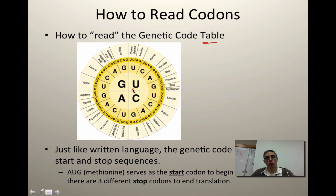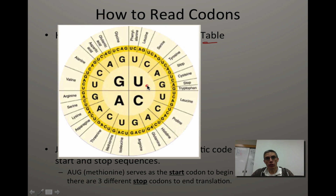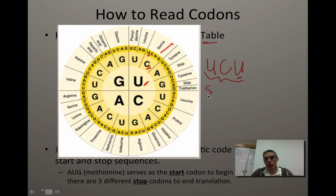Let's say, for example, that we have the code UCU — that's going to be found on our messenger RNA strand. You would start on the inside of the table at U, then work your way out to C, and then our third nitrogen base is U. If you decode this — in other words, what type of amino acid would be produced by this codon — we would say it would be serine. So serine would make up part of our strand of our protein. You notice that we actually have four different opportunities to actually produce that serine, so there's not just one way to produce that amino acid.